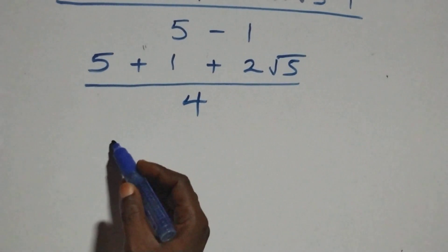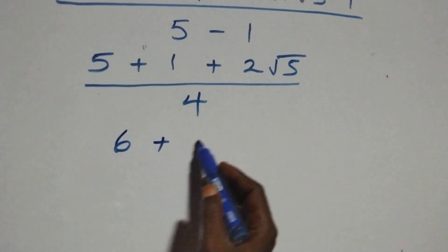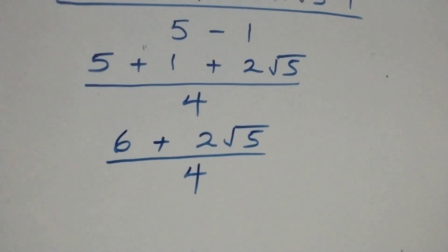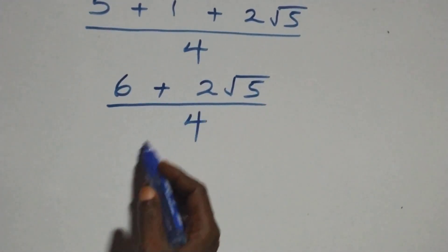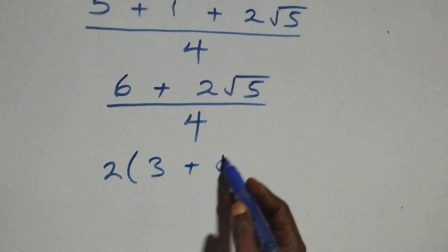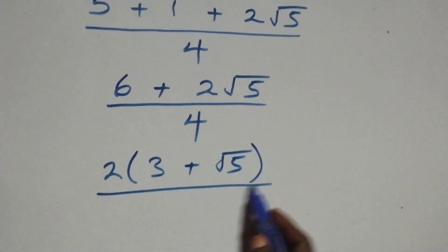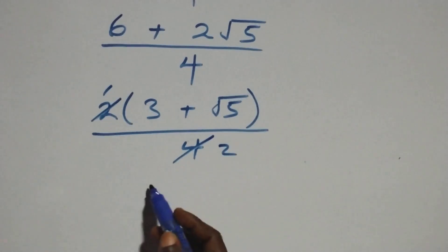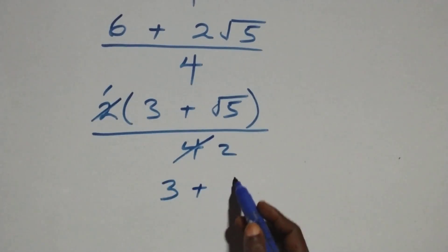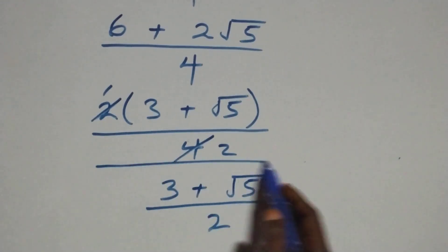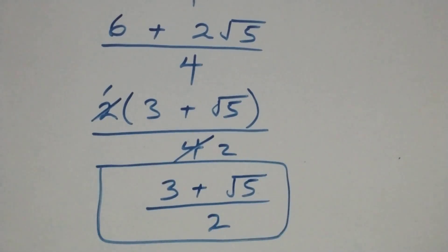So we get five plus one, that is six, plus two root five, all over four. Then we factor out two from the numerator: two into bracket three plus root five, over four. Two cancels — two goes into two once — giving us three plus root five over two. That is the simplified form from Method 1.